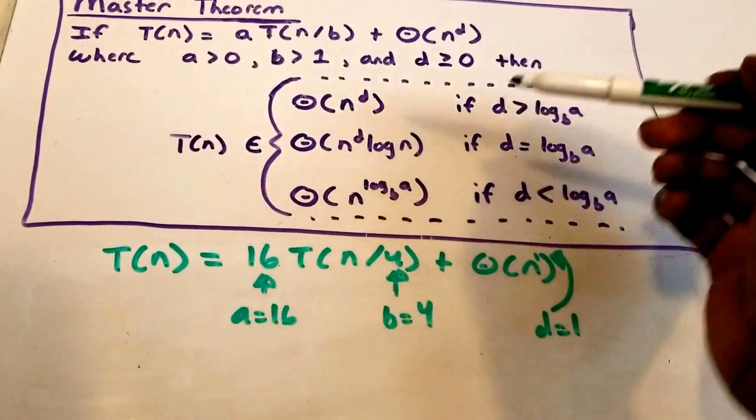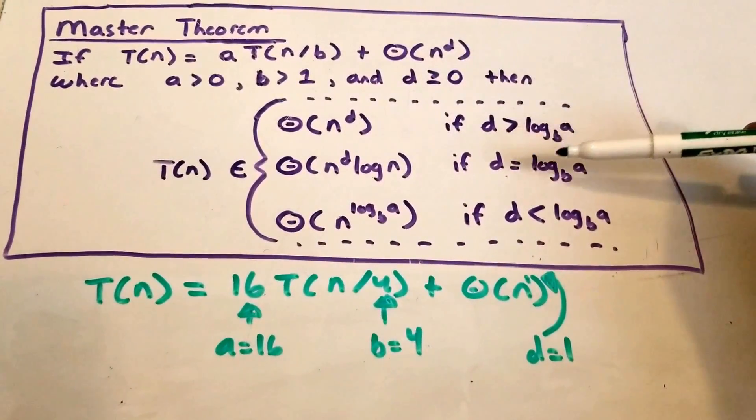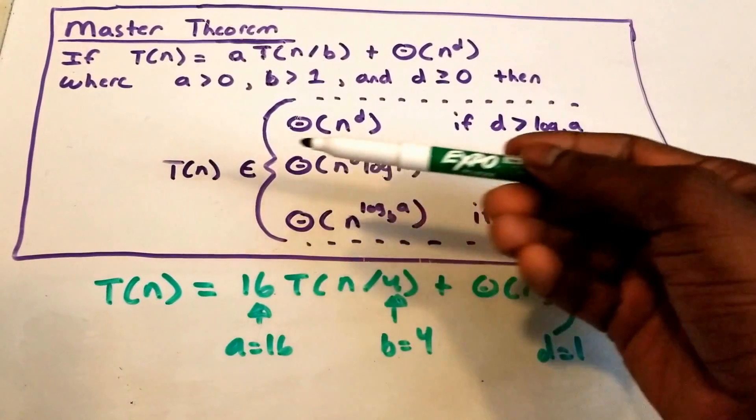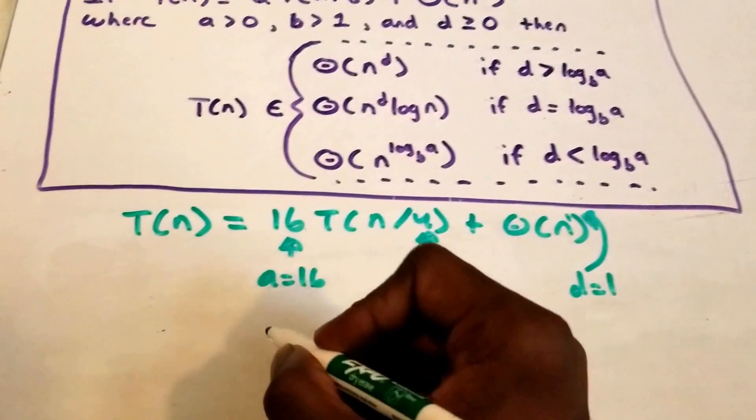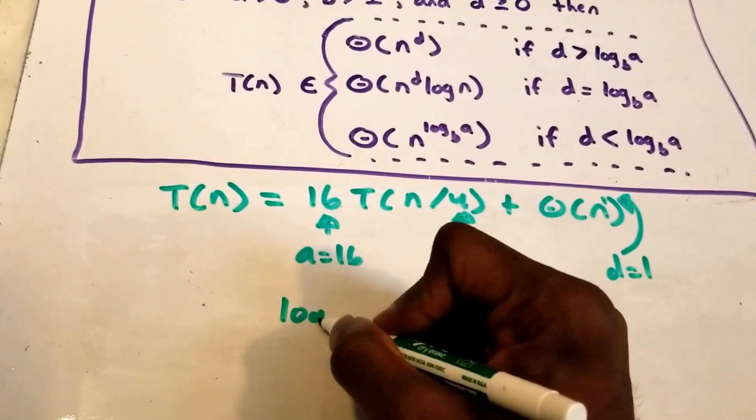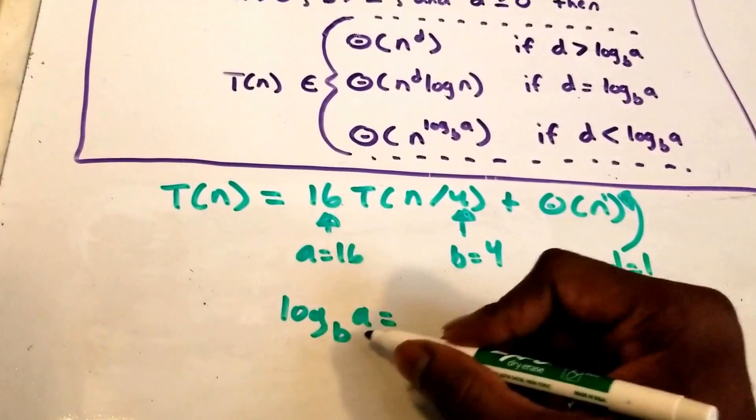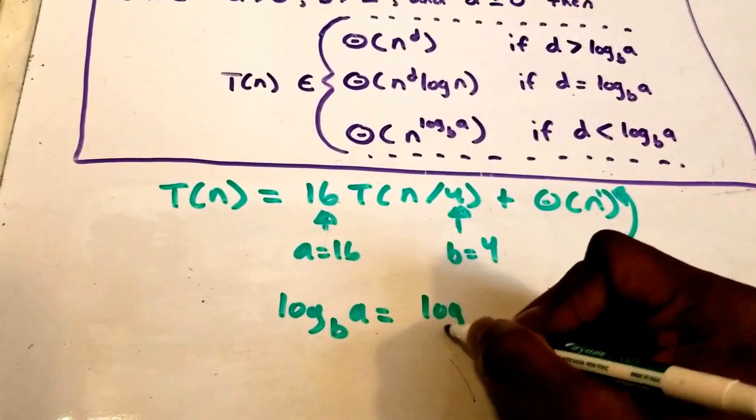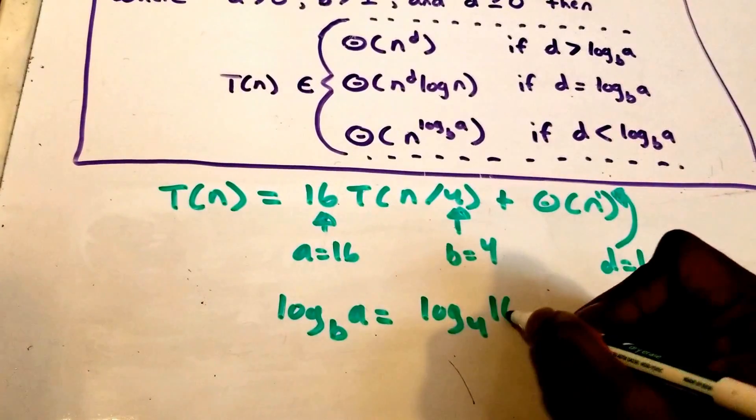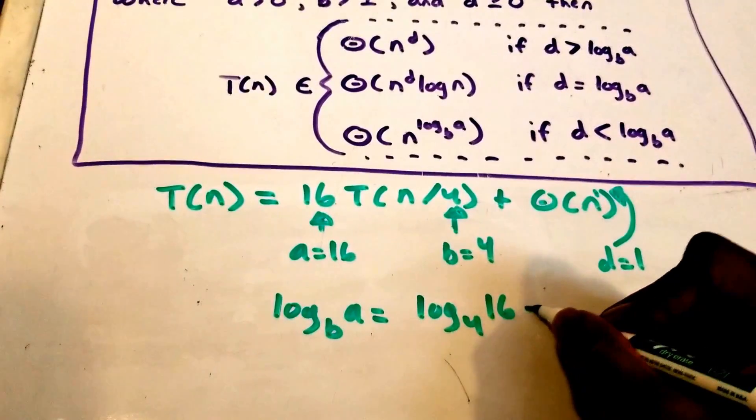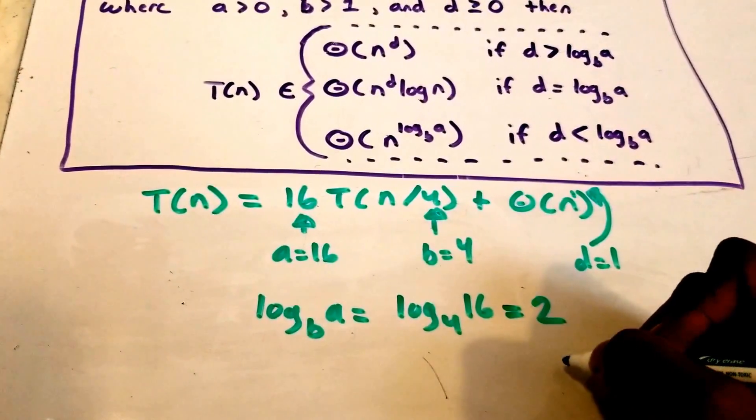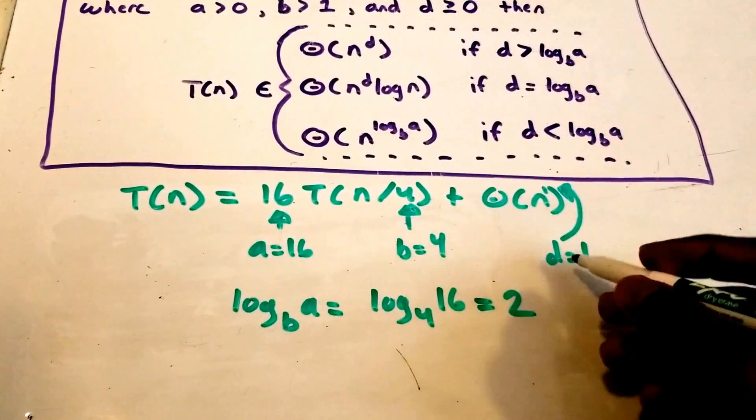Now we need to figure out which case or condition to use to figure out what T of n belongs to. So we need to figure out what log base b of a is equal to and log base b of a is equal to log base 4 of 16 and this is just equal to 2. All right, and our d is equal to 1.